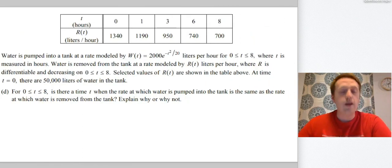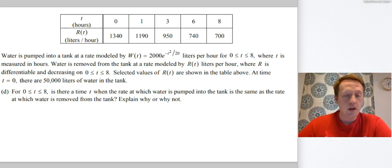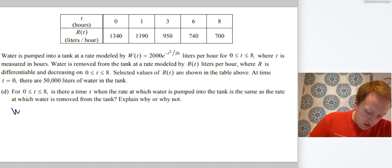All right. Last little bit. And this part's tricky. This part's definitely challenging. It says for 0 to 8, is there a time T when the rate at which water is pumped into the tank is the same as the rate at which water is removed from the tank? Explain why or why not. So what we're going to do is we're going to say, what does it even mean for them to be the same? Well, literally what that means is does W of T equal R of T ever?